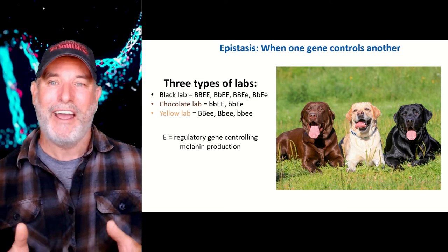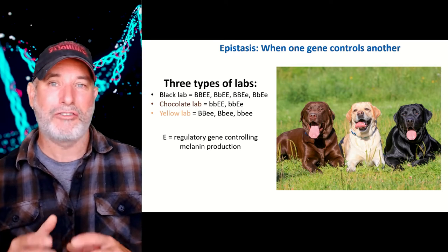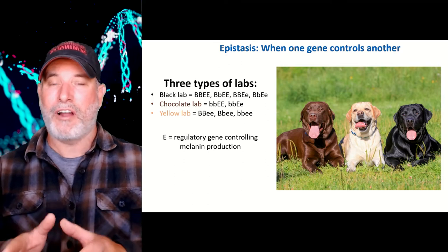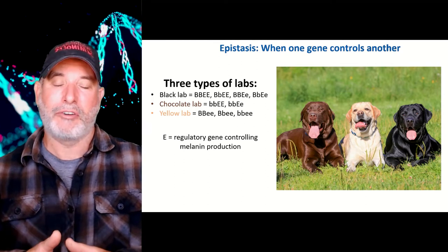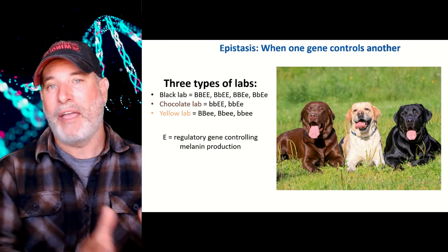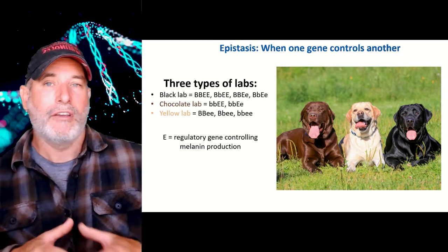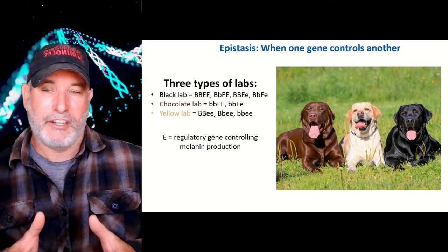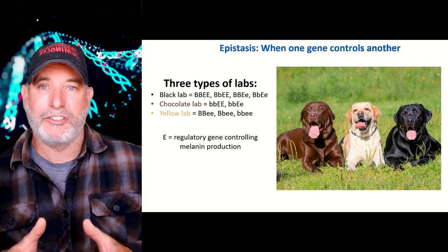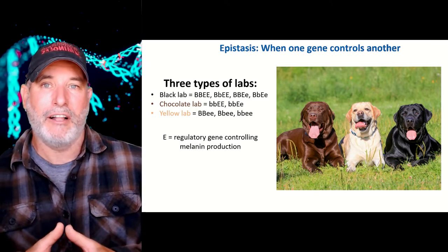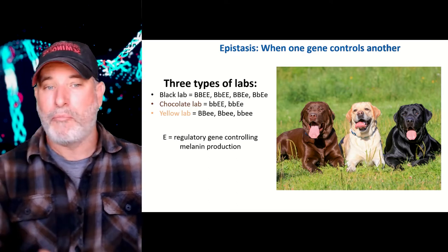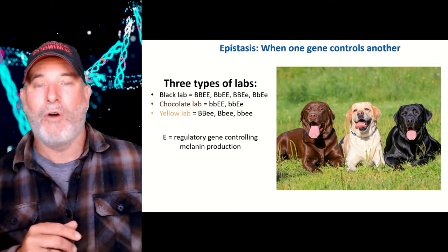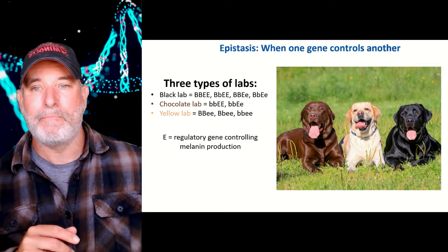That's how you get three different lab coat colors — it depends on whether you have melanin production based on both your melanin gene and the regulatory gene. It doesn't matter what your genes are for producing melanin: if you're not putting down melanin, you are a yellow lab.